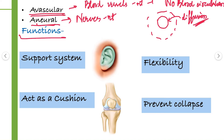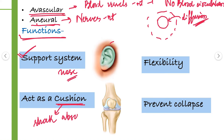Now we will discuss the functions of cartilage. Cartilage acts as a support system — for example, cartilage is present on the external ear tip and the septum of the nose. Next function: it acts as a cushion. When movement occurs at joints and two bones move, cartilage acts as a cushion — it absorbs the shock, and thereby prevents friction and injury.